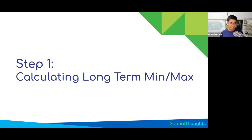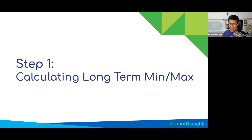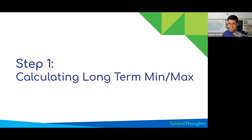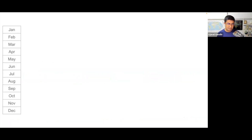To compute VCI, the first step is to compute long-term minimums — and this has to be done at every interval. If you're tracking monthly, you need the minimum NDVI for January, the max NDVI for February, and so on. If you're tracking weekly, you need the weekly historic NDVI. The key challenge is: how do we compute the min and max for every period for the last 10 years?